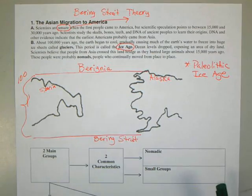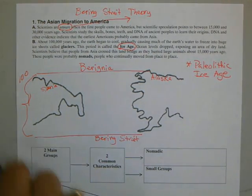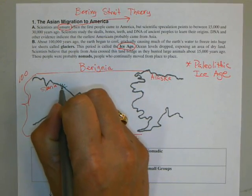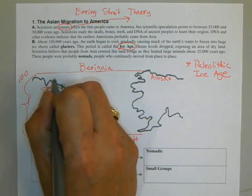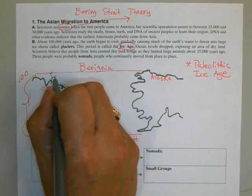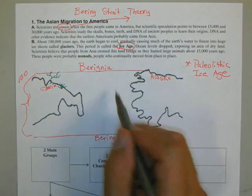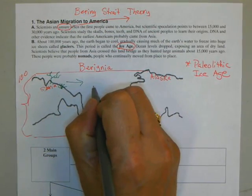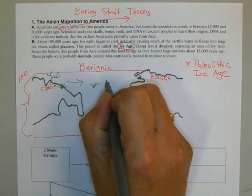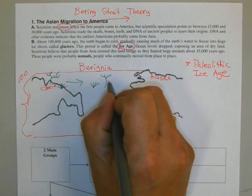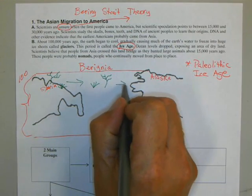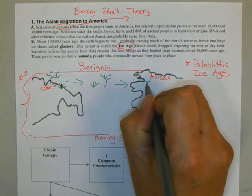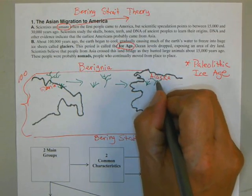According to the Bering Strait Theory, you have vegetation growing on the Siberian side — brush, trees. Once the land bridge is there, this brush, vegetation, and trees are also going to be growing across to the land bridge, and they're going to cross. Over here you already have vegetation, but it only continues more.